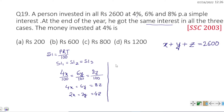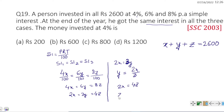Let 2x = 3y = 4z = k. So y = 2x/3 and z = x/2. We now have x, y, and z all expressed in terms of x.